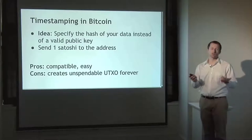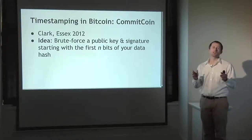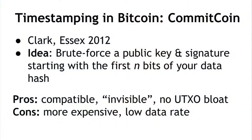The Bitcoin community takes a dim view of this approach because it creates unspendable outputs that have to be tracked. A more sophisticated way is called CommitCoin, which finds public keys and signatures that have the data you want to commit to embedded in the bits of the public key and signature. You do some brute force work to find a special public key where the bits representing the hash of your data are also the bits of a valid public key. The advantage is it's invisible to miners and doesn't add unspendable transaction outputs; the downside is it's more expensive.